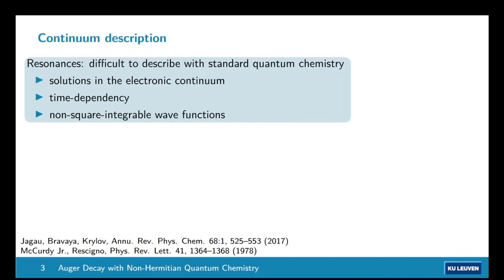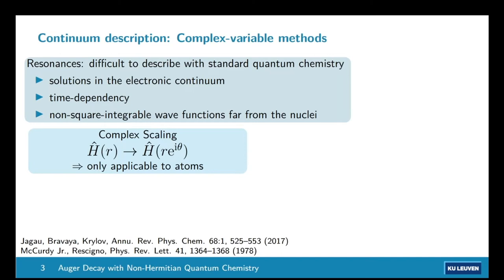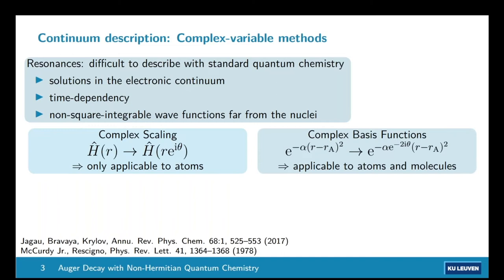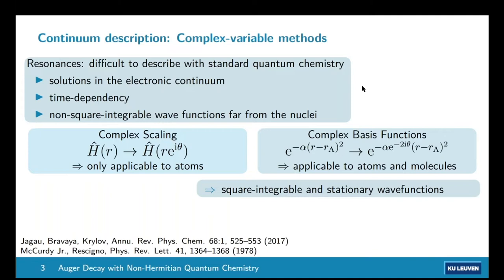The solution we choose is complex variable methods. It is mathematically provable that we can introduce the boundary condition of an outgoing electron into our wave function or Hamiltonian operator by using complex numbers. For example, in complex scaling we multiply all coordinates in the Hamiltonian by a complex number. For molecules specifically, we use complex basis functions: we selectively choose which basis functions to apply this to, introducing a complex number in the exponent of the Gaussian basis function.